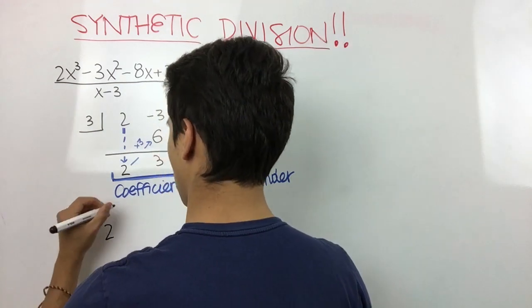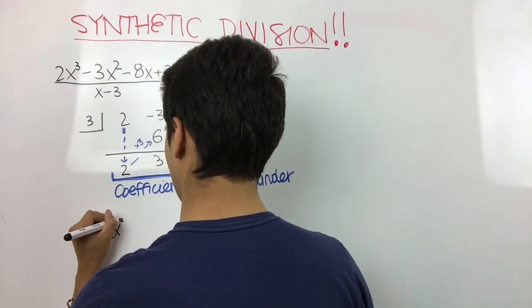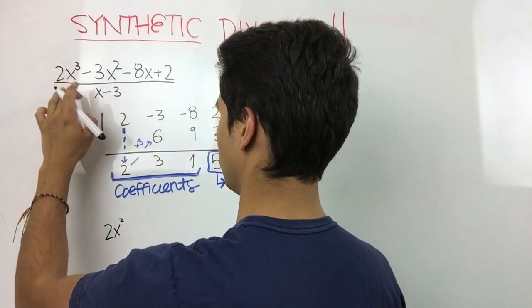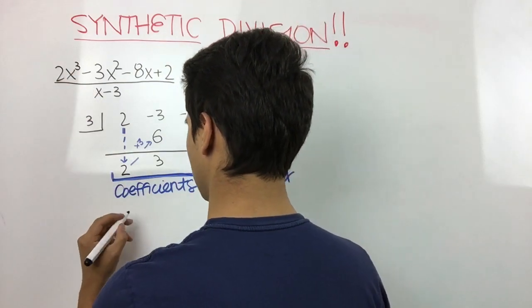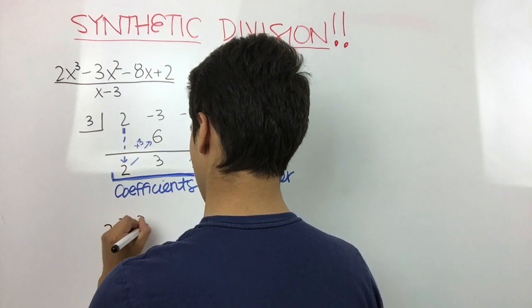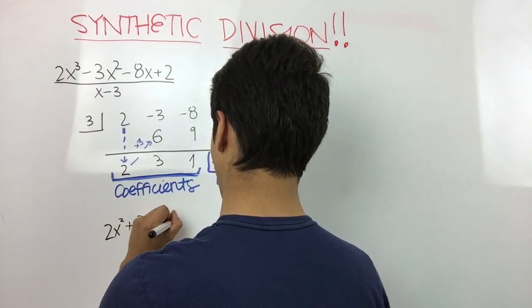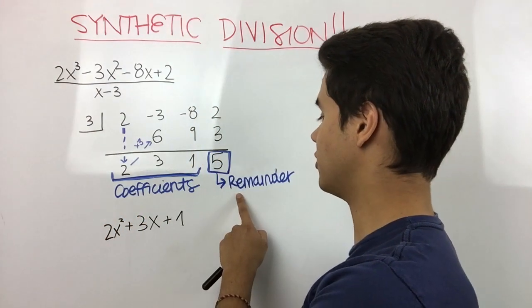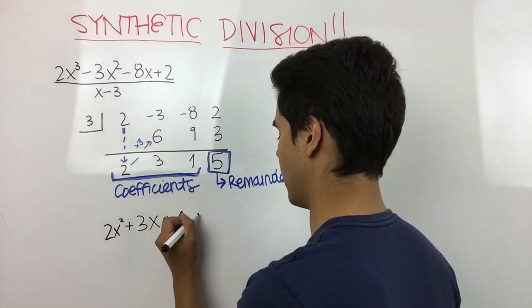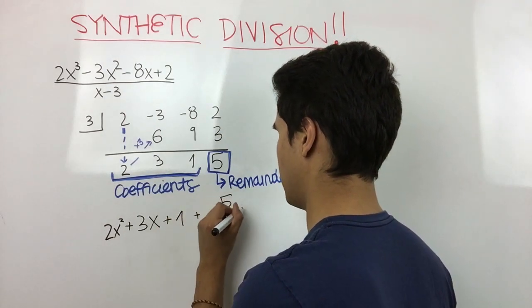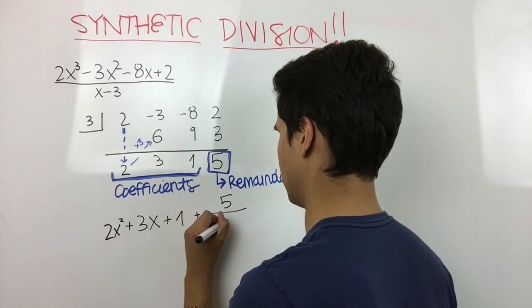We have to remember that our answer polynomial will have one degree less than our original polynomial. So the answer will be 2x squared, because this was x cubed, plus 3x plus 1. And this 5, the remainder, we're going to write it as plus 5 divided by x minus 3.